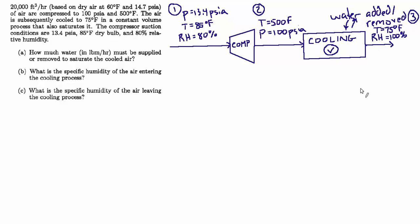That at least frames out what's happening in this problem. Part A, where they ask how much water is being added or removed, that's going to depend on the difference between the humidity ratios at state 2 and state 3. Parts B and C ask about that: B asks about the specific humidity of the air entering the cooling process at state 2, and C asks about the specific humidity of the air leaving the cooling process, which is state 3. So we're going to do B and C first, get those specific humidities, and that will allow us to find the answer to A.